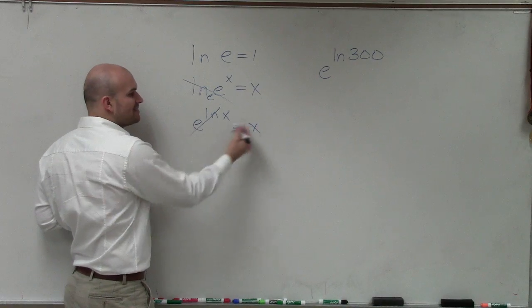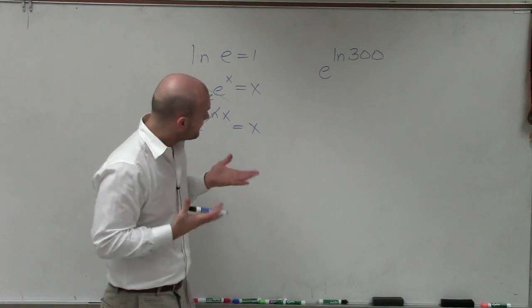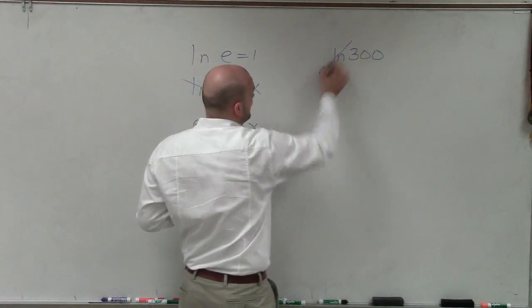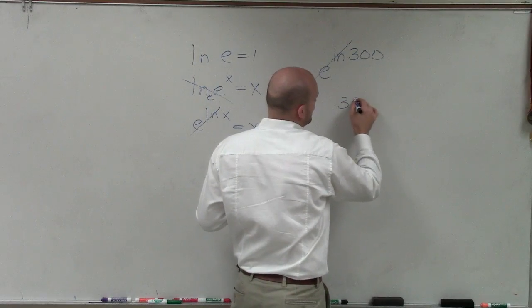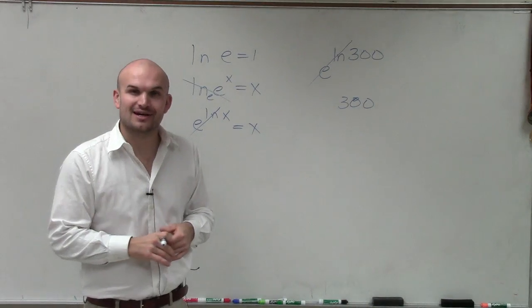In this case, we have the exact same thing where it's just going to represent our x. So here, if you're going to look at this, what we simply have is e ln. Those are going to undo our operations, and we're just left with 300. That is how you evaluate without a calculator. Thanks.